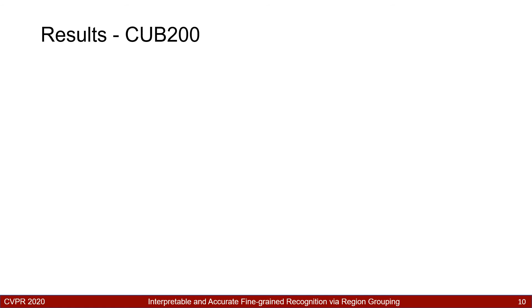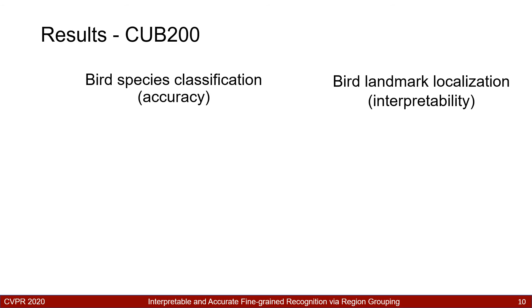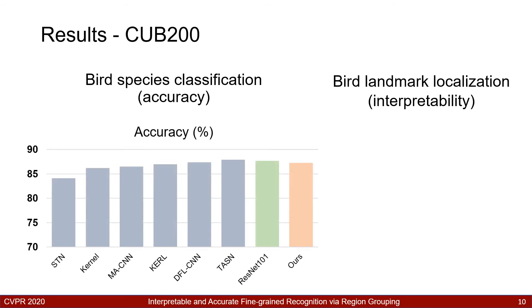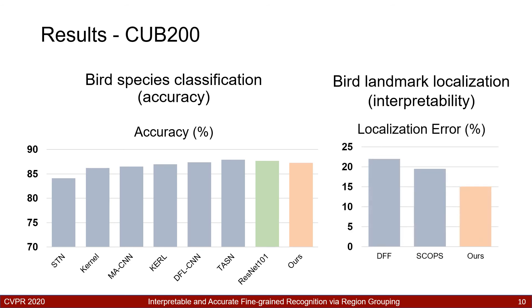We first evaluate our model on fine-grained bird species recognition using CUB-200. We report standard accuracy of our model, and we also use our part segmentation to regress human-annotated bird landmarks for measuring interpretability. For accuracy, we compare our model to other state-of-the-art methods. As shown in the last figure, our baseline ResNet-101 already demonstrates higher accuracy, and our model performs on par with the state-of-the-art methods. For interpretability, our method significantly outperforms state-of-the-art part segmentation methods by at least 4.4% on the landmark localization task.